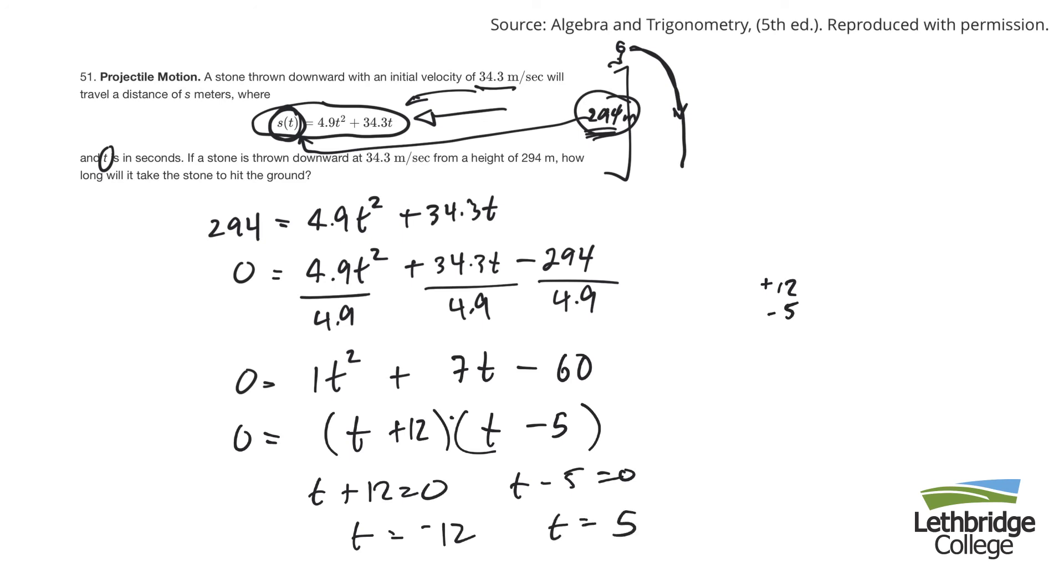So a negative time doesn't make sense. And that would be if this parabola was extended over this way. That would be whatever the time was at that side. But that part doesn't make sense, because I've got the stone up there. So this part here makes sense. So the time, how long will it take the stone to hit the ground? Five seconds.